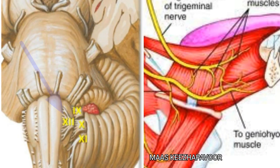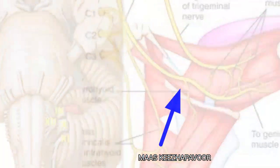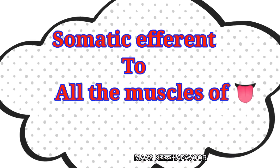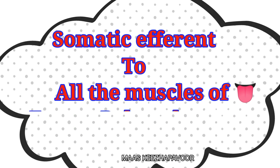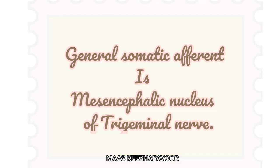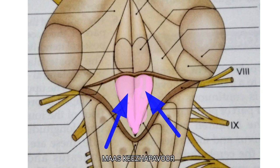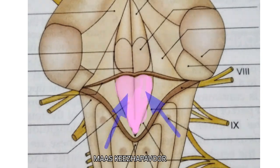The hypoglossal nerve is the 12th cranial nerve. Since it enters the tongue from below, it is named as hypoglossal. Its functional component is that it carries somatic efferent fibers to all the muscles of tongue except palatoglossal. The general somatic efferent column is the mesencephalic nucleus of trigeminal nerve where proprioceptive fibers from tongue end. The nucleus for hypoglossal nerve is located in the hypoglossal triangle in the floor of the 4th ventricle.